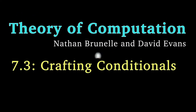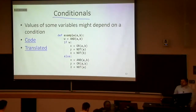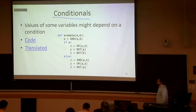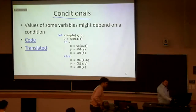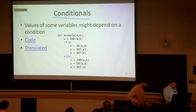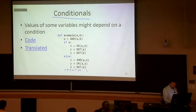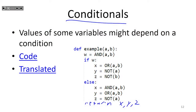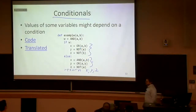The next thing we're going to add to our programming language is conditionals, or if-statements. We'd like to be able to do something like this — maybe returning x, y, and z. So we want to have some chunk of code where if some boolean was true, we evaluate some group of lines; otherwise, we do these other lines instead. We'd like to have if-statements that look something like this.